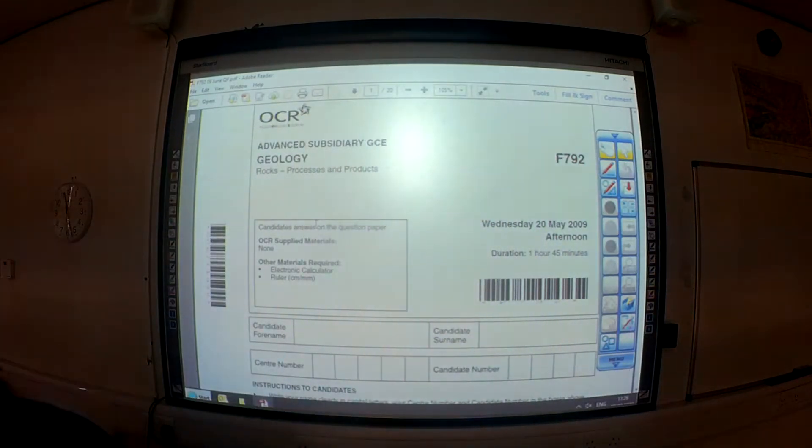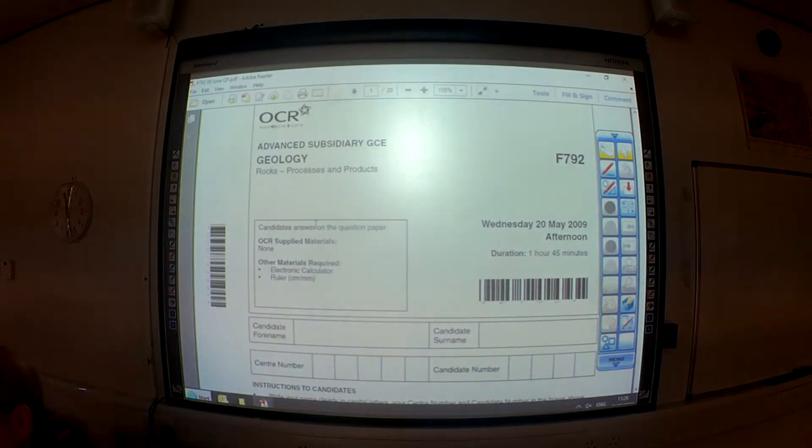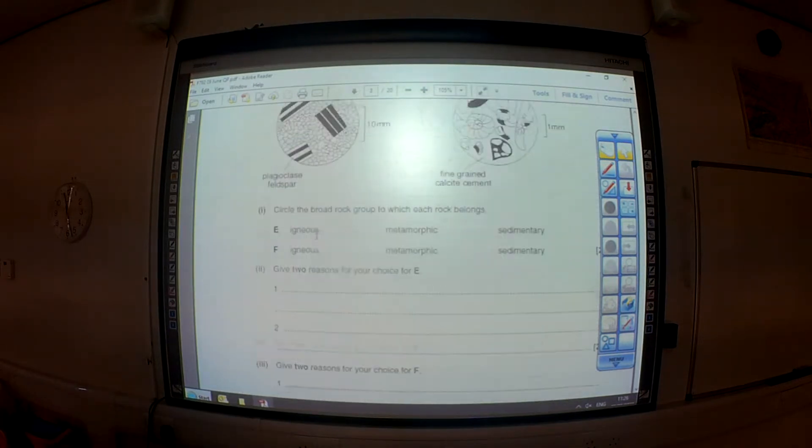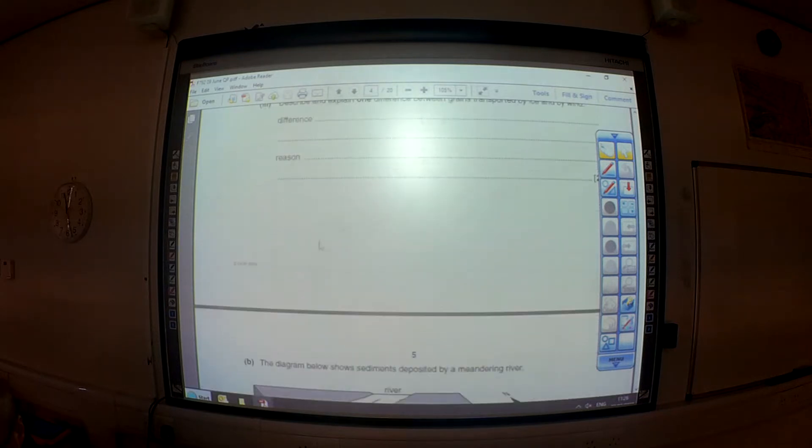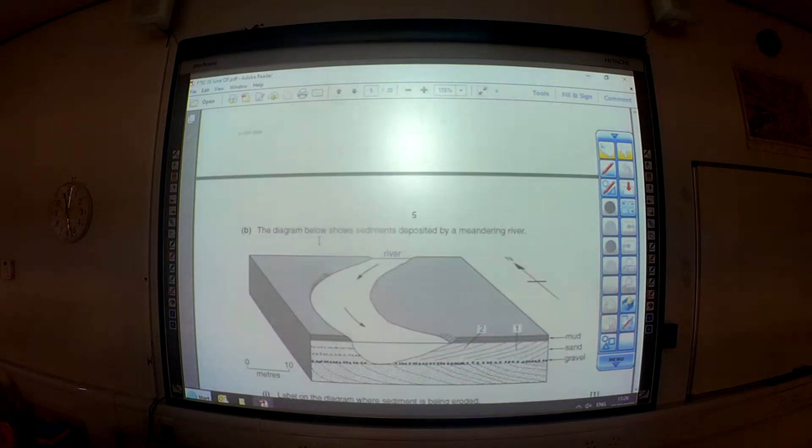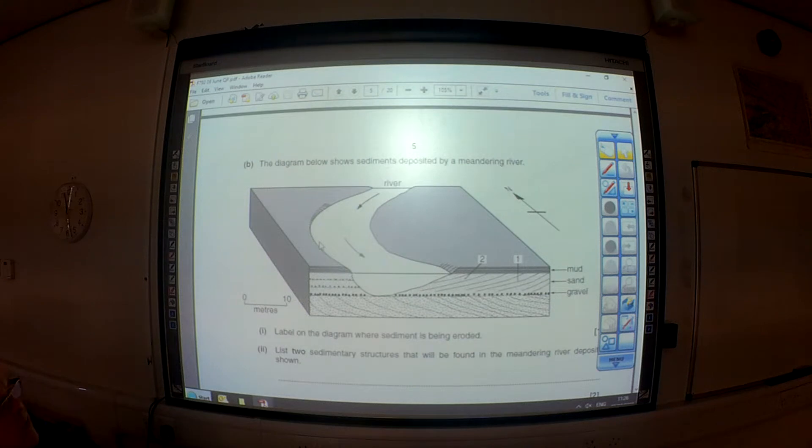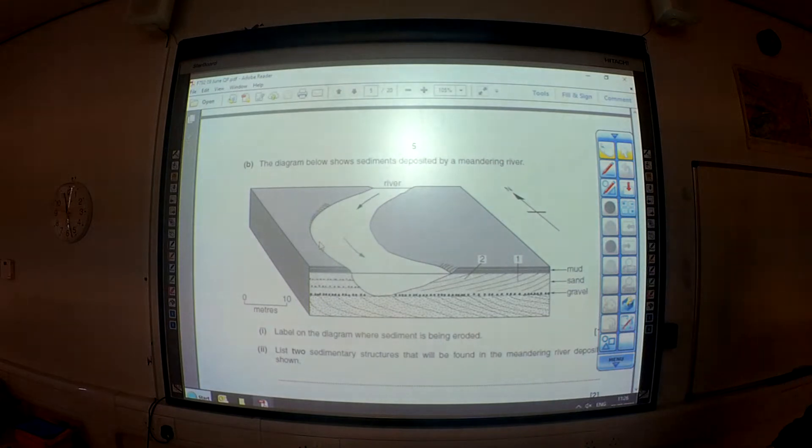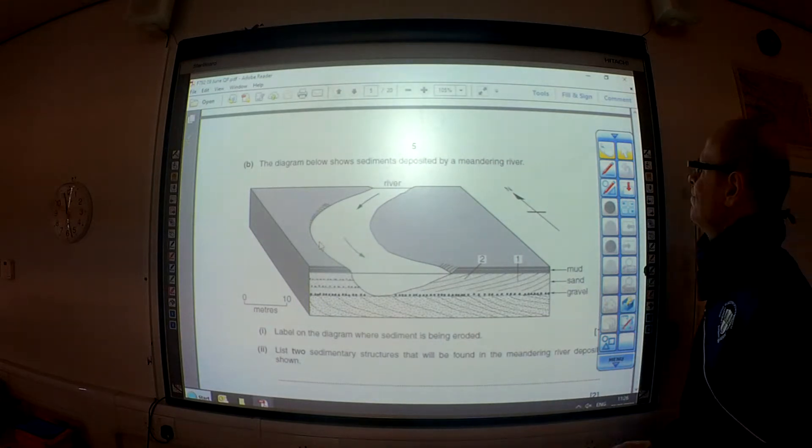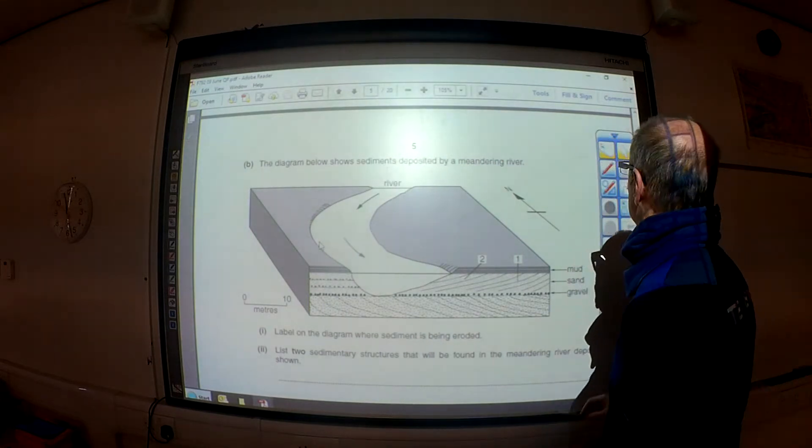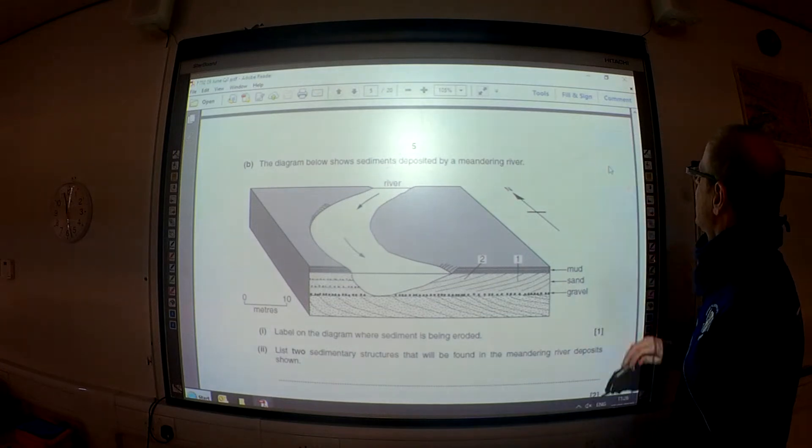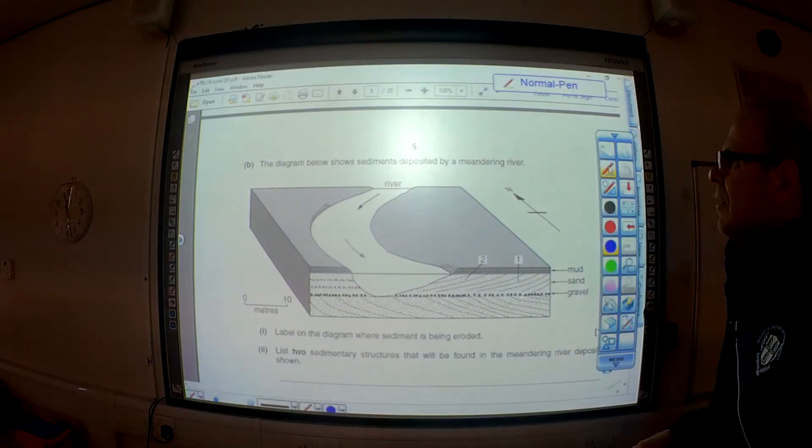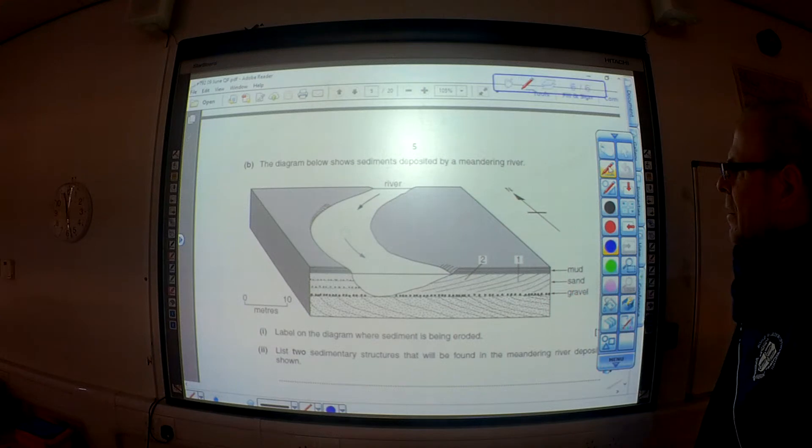So here we go, we're starting with F792 May 2009 and I'm going to scroll down to question 2B and I'm going to work a little bit with this diagram here which is a diagram of a meandering river in a floodplain. I'm going to just try to work out the number of depositional units and the dynamics of the river here as well.